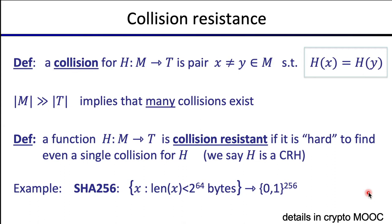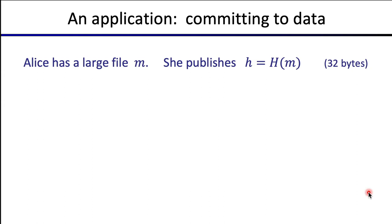There are many applications for cryptographic hash functions. I want to talk about an application for collision resistance that has to do with committing to large amounts of data. Imagine Alice has a file or message M — a fairly large amount of data — and she will commit to this data by publishing a hash of M. The hash is only 32 bytes, so it's a very short commitment to possibly megabytes of data. That little digest H actually commits her to the message.